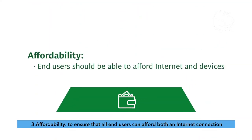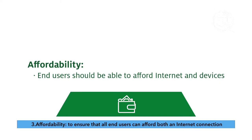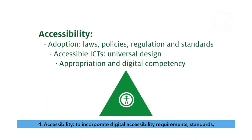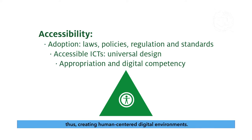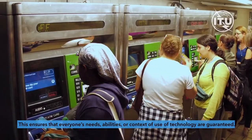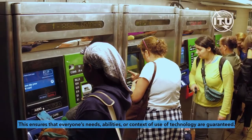Three: Affordability. To ensure that all end users can afford both an internet connection and the technological devices needed to communicate. Four: Accessibility. To incorporate digital accessibility requirements, standards, and universal design principles at all stages of technological development, thus creating human-centered digital environments. This ensures that everyone's needs, abilities, or context of use of technology are guaranteed.